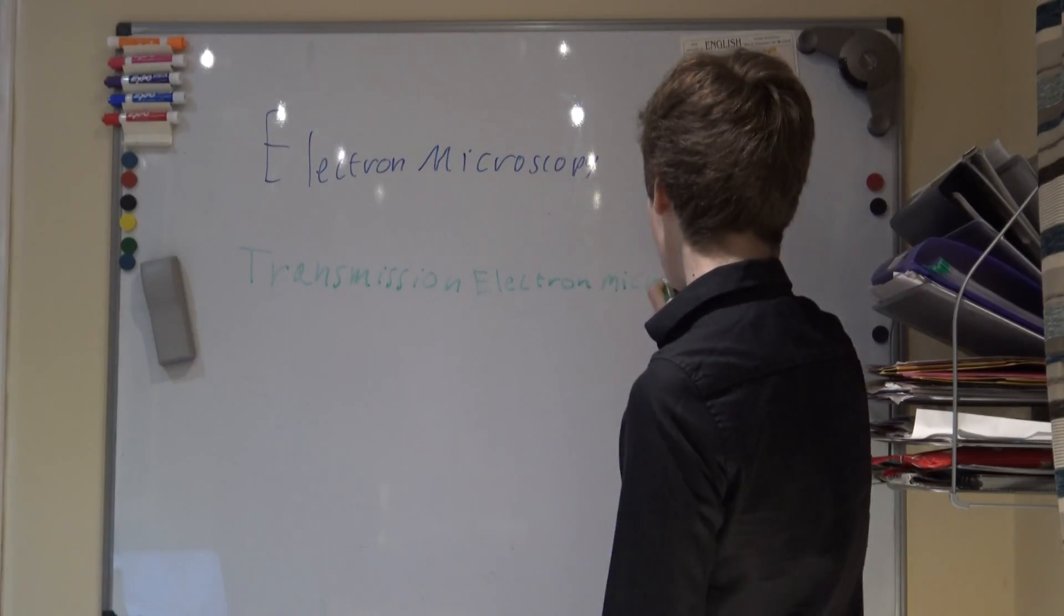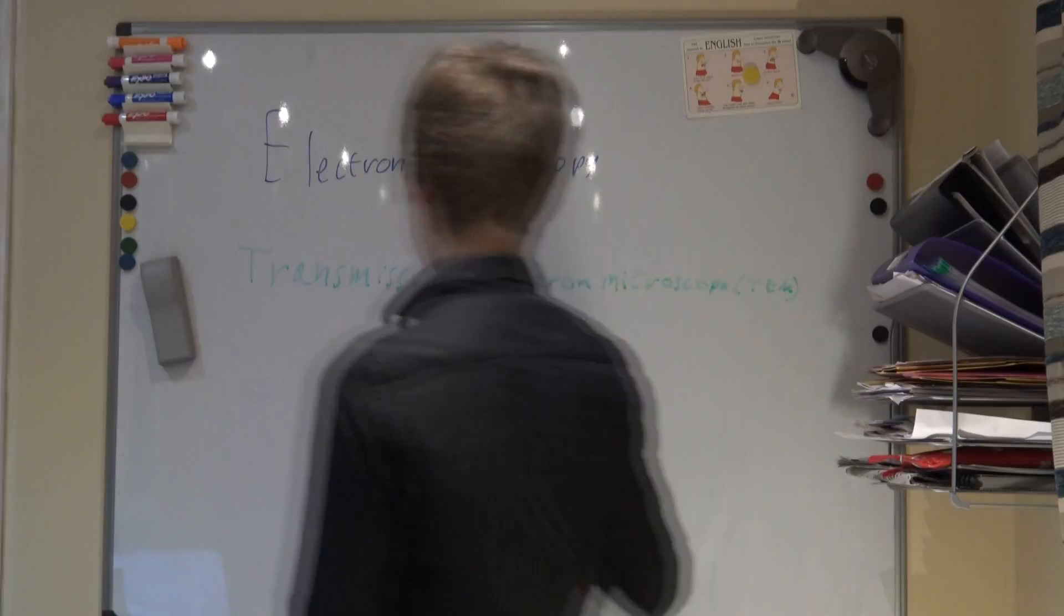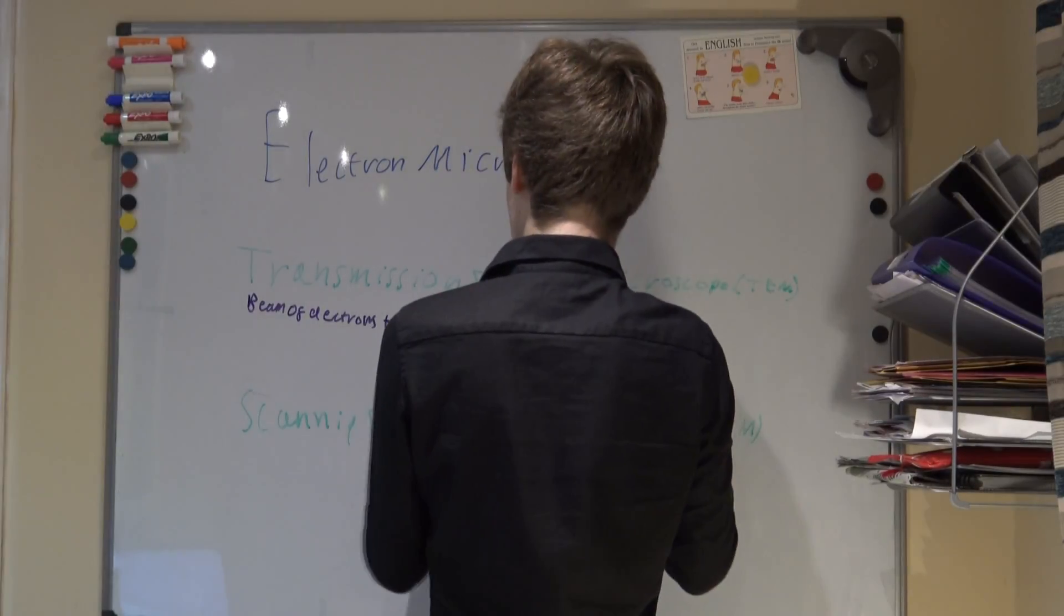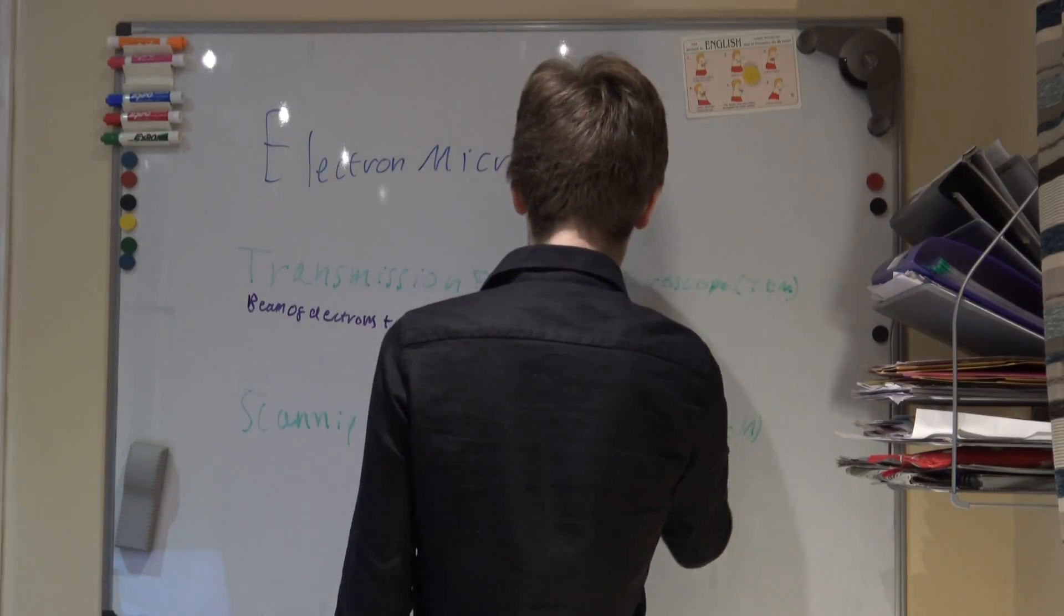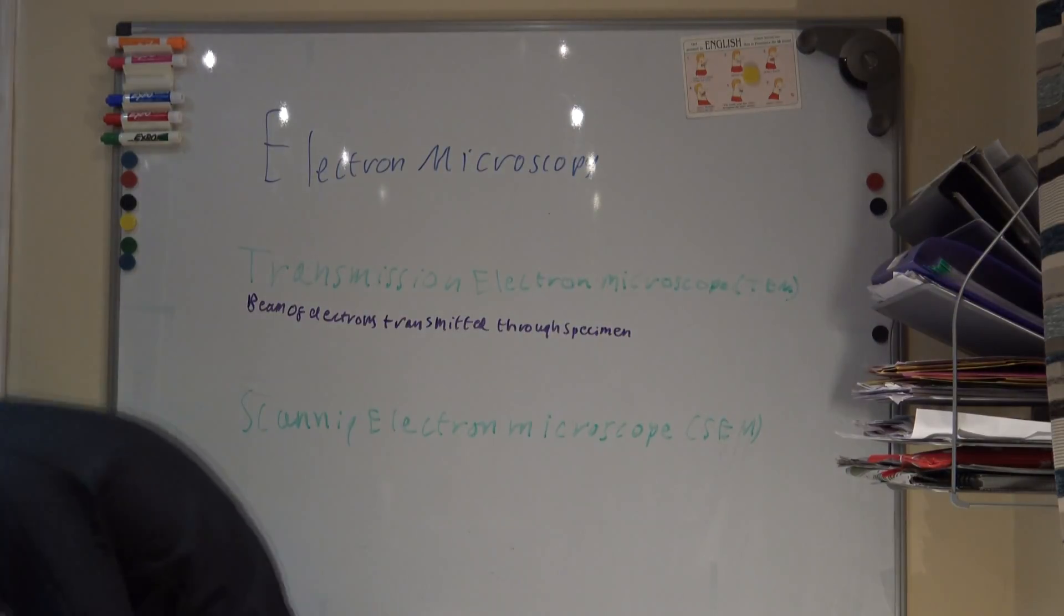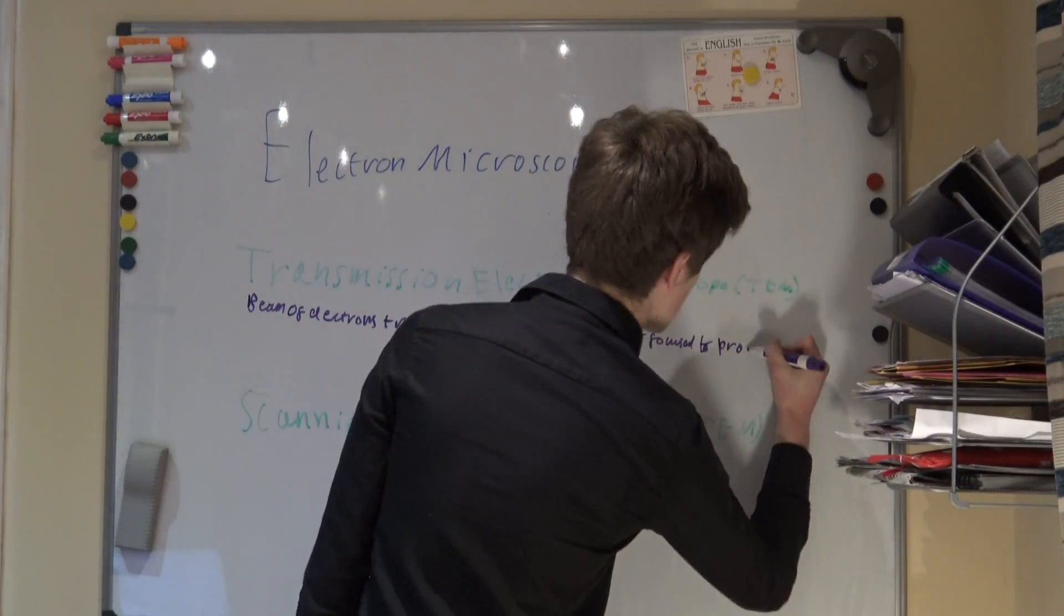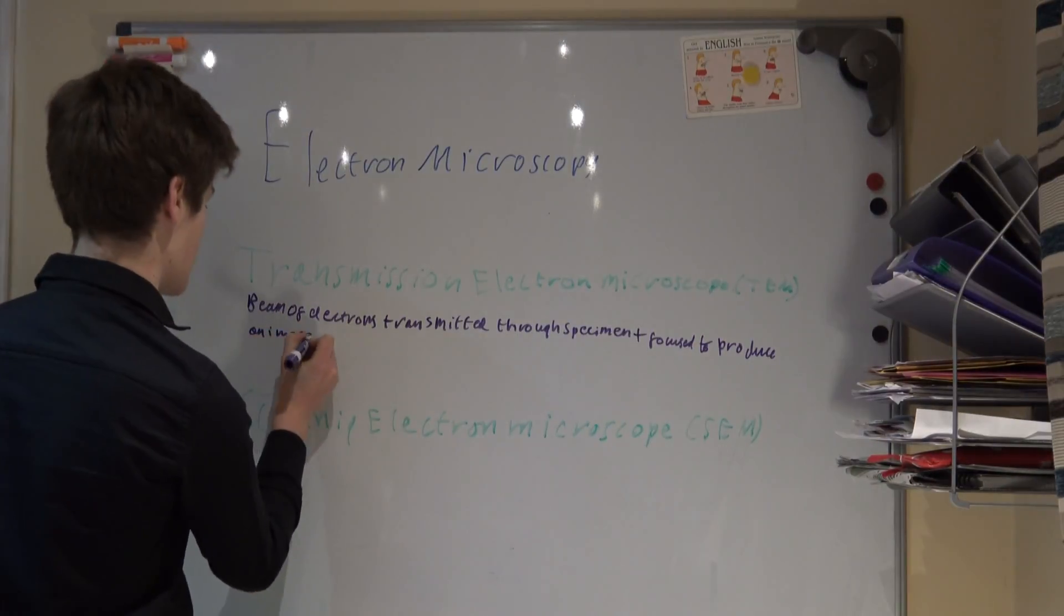There are two types of electron microscope, the transmission electron microscope and the scanning electron microscope. In the transmission electron microscope, a beam of electrons is transmitted through a specimen and focused to produce an image. This has the best resolution, with a resolving power of 0.5 nanometers.